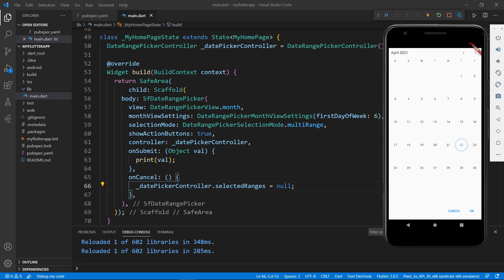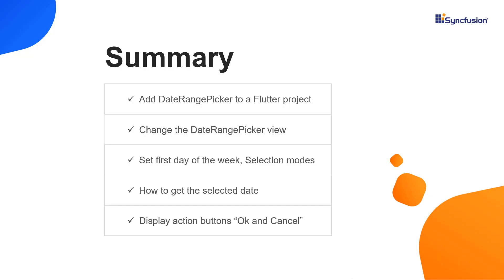In this way you can control selection using OK and Cancel buttons. Let me summarize the main points: You saw how to add the Syncfusion Flutter Date Range Picker widget to a Flutter project. You learned how to change the Date Range Picker view and the first day of the week. You also learned how to change the selection modes and how to get the selected date. Finally, I explained how to display action buttons — OK and Cancel — at the bottom of the Date Range Picker, and used them to get selected values and clear the selection. You can download this working example from the GitHub link in the video description. You can also check if you are eligible for our Community License, which gives you a free license key to use our Flutter products. If you found this video useful, click the like button and subscribe to our channel. Thanks for watching.